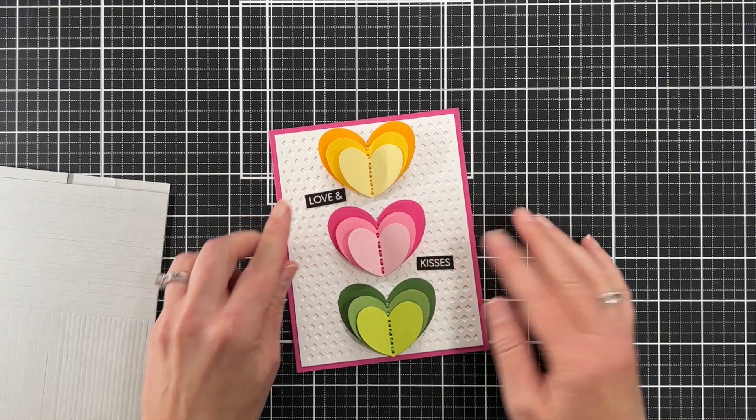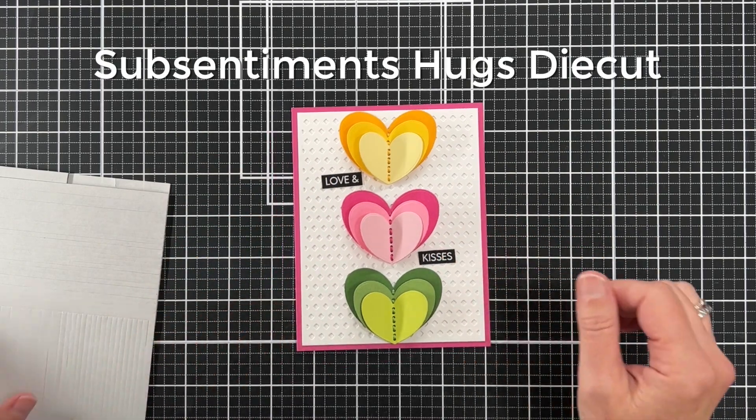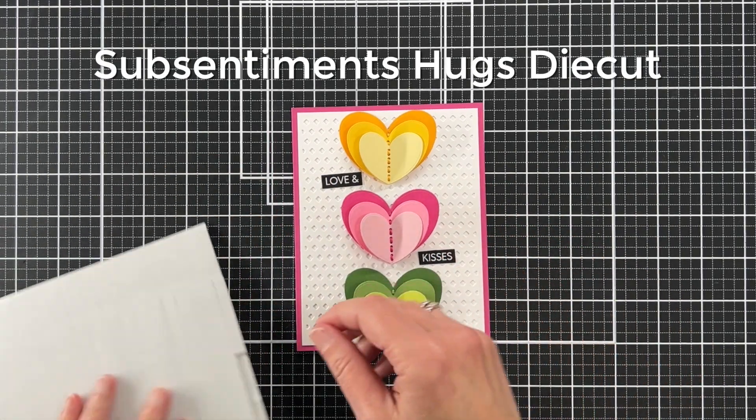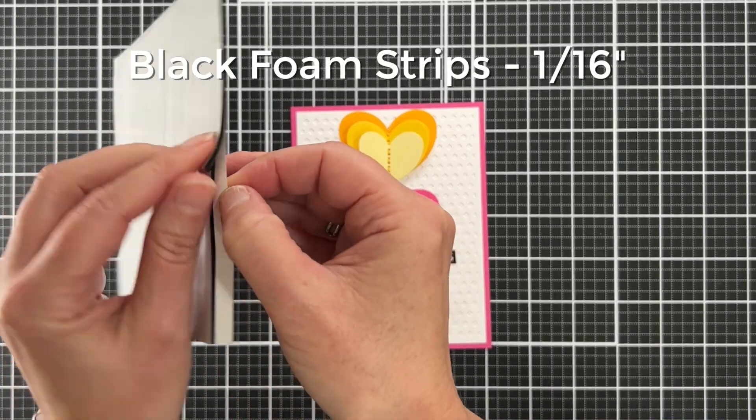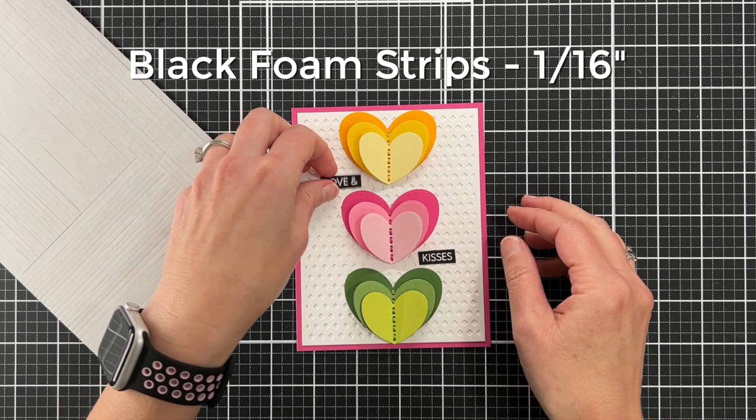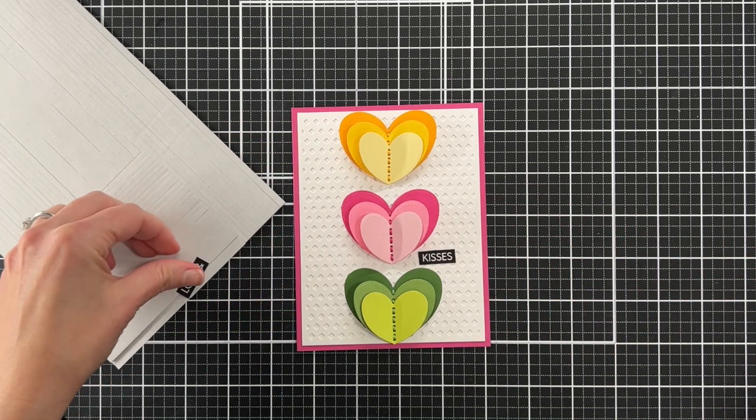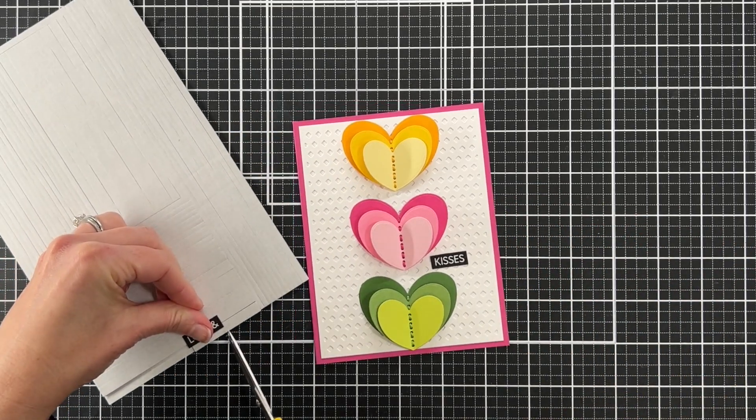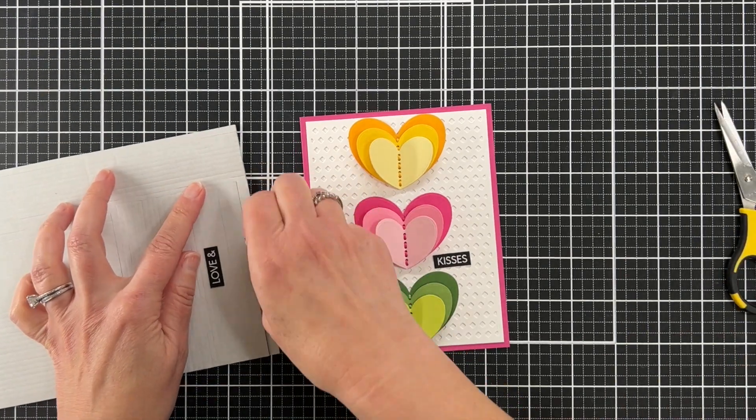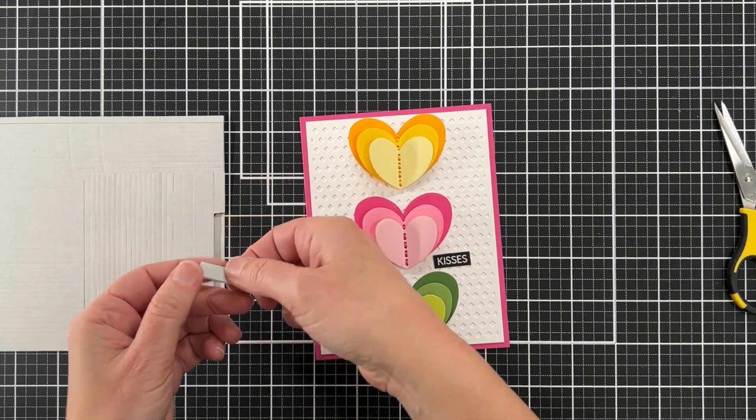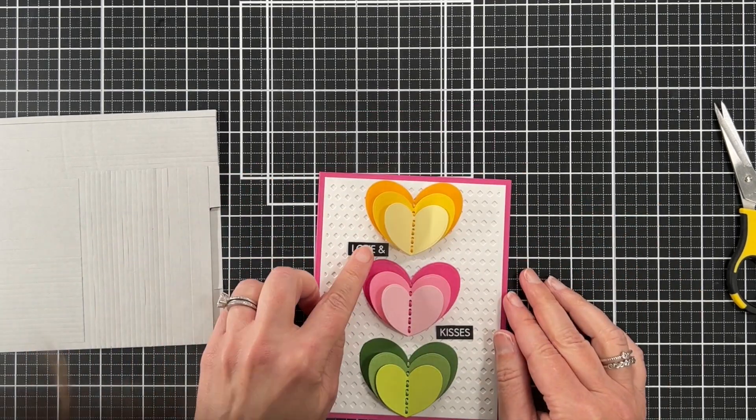Now we're ready for the sentiments. These come from the Sub Sentiments Hugs die cut set. I'm going to attach them with this black foam strip tape. Waffle Flower had these white foam strips and they've come out with the black foam strips this year, which I think is great. It works perfectly with these little die cut sentiments.